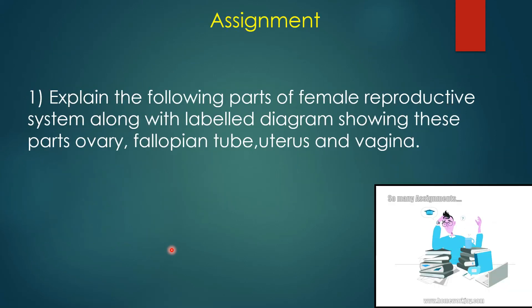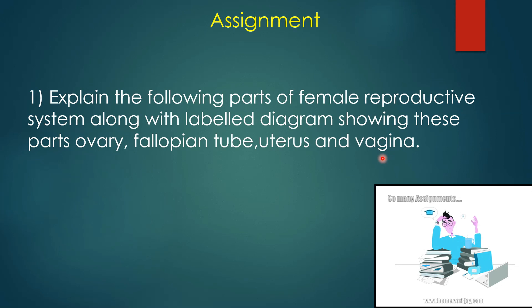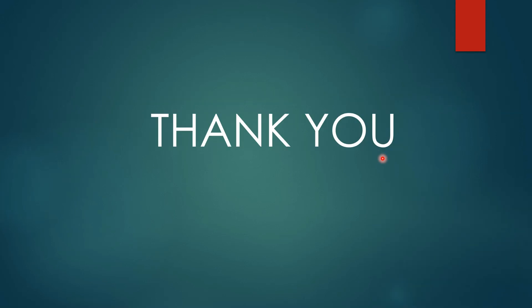Take down the assignment: explain the following parts of the female reproductive system along with a labelled diagram showing ovary, fallopian tube, uterus, and vagina. Make sure you write down all the notes properly and study them. I hope this module was very helpful to you all. Thank you so much for attending. We will come back with the next module of the same chapter.